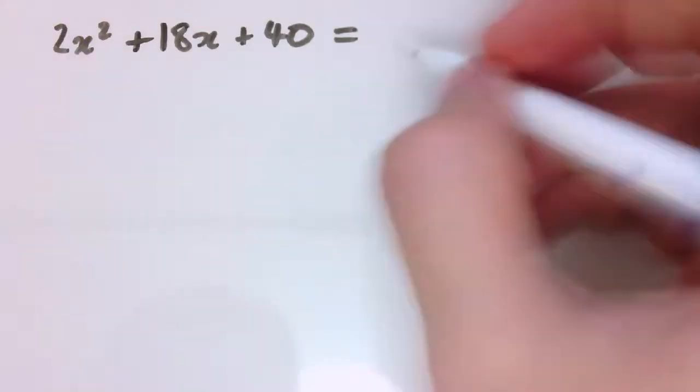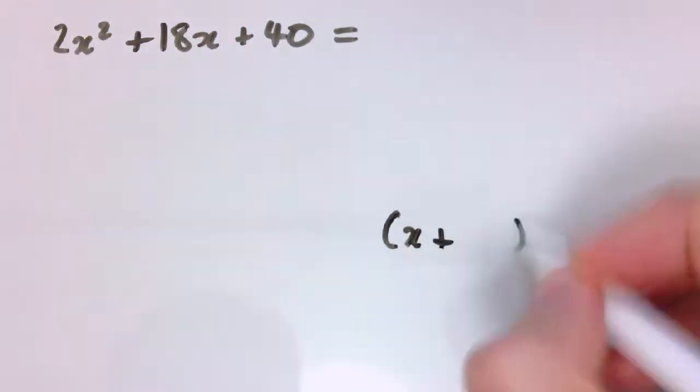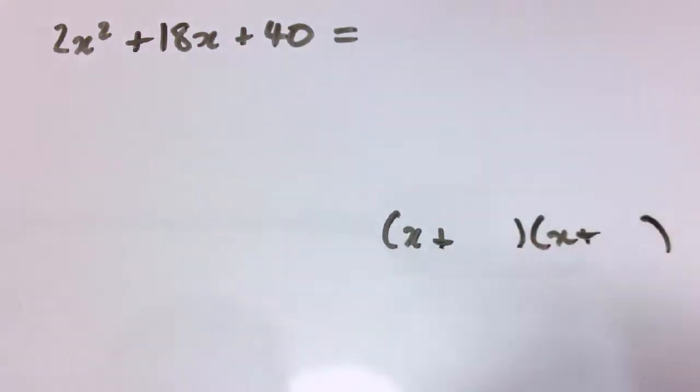This one looks slightly different because it's got this 2x squared at the front. There is a harder method for dealing with these sorts of things, but whenever you're factorizing something before you think you need a much harder method, we should start by thinking is there anything easier we could do to help. And here there is, because before factorizing we should pull out a common factor.